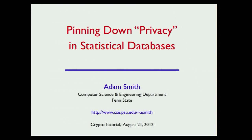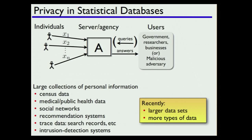The title of my talk is 'Pinning Down Privacy in Statistical Databases.' A lot of the talk is about discussing the meaning of 'privacy' and how we convert this natural language notion into something mathematically rigorous. When I say privacy in this talk, I'll be talking about privacy in statistical databases — imagine a bunch of individuals who have sensitive personal data collected by some server or agency, and the goal is to make the benefits of this data available as widely as possible, while being concerned about privacy.